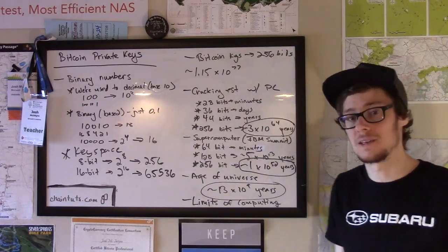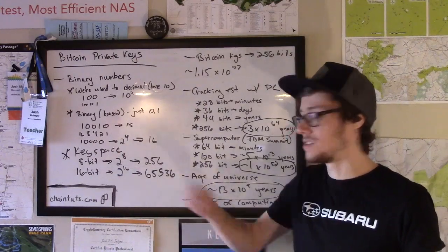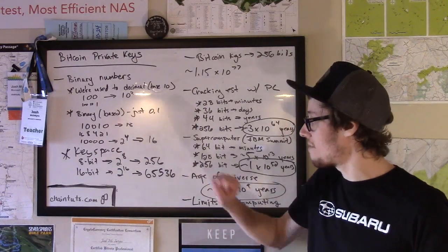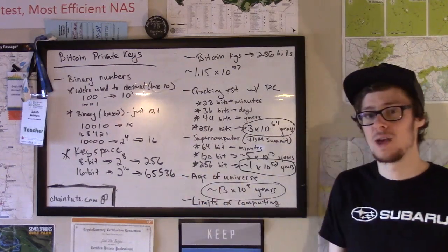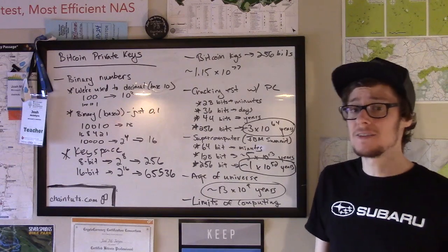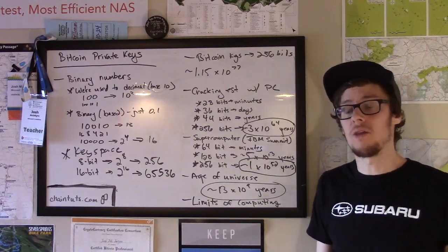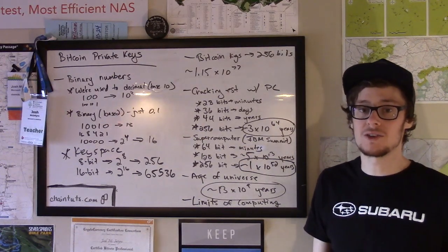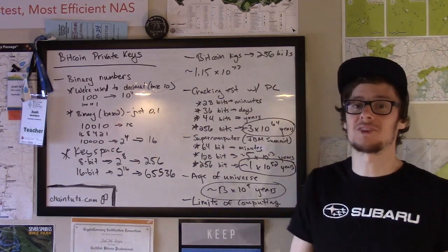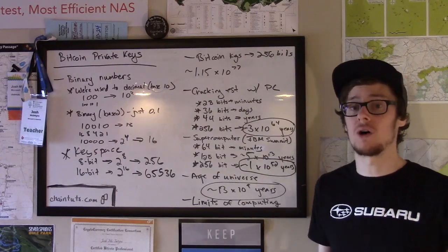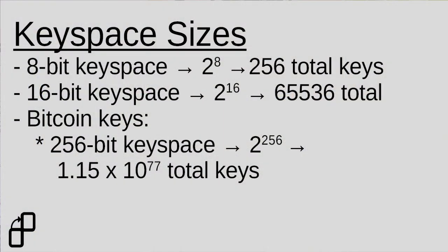A 16-bit key space is 2 to the 16th, which works out to 65,536. We only added 8 bits, but the number of possible keys dramatically increased. As you increase the number of bits in a key space, the number of possible keys increases exponentially — the number goes up dramatically every time you add a bit. So when we're talking about Bitcoin's 256-bit private keys, 256 bits might not seem like a lot, but factored as a power of 2 the number is unfathomably large.